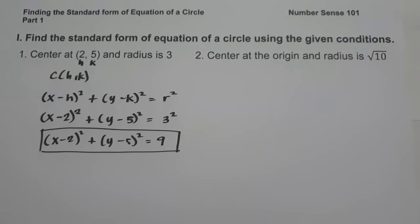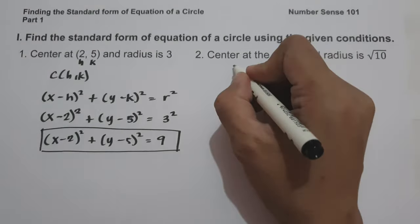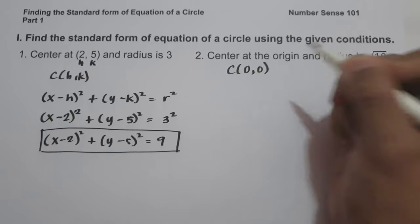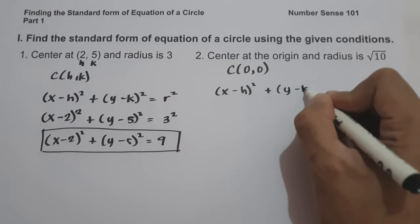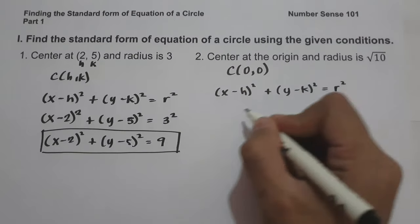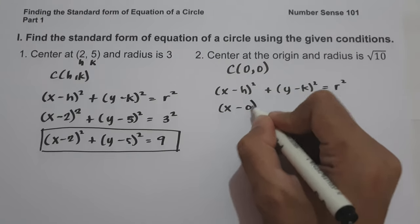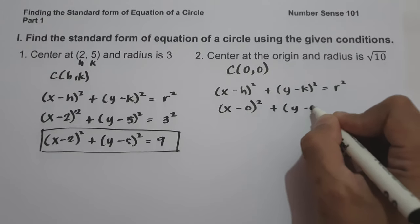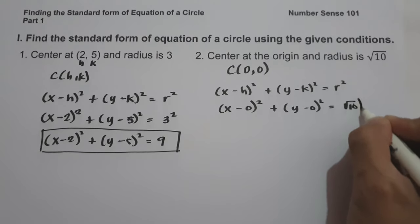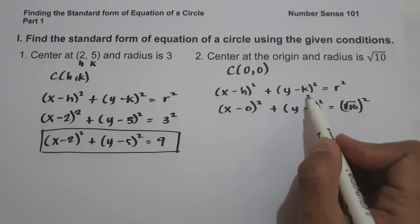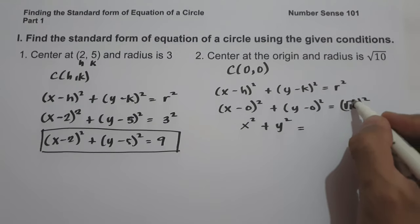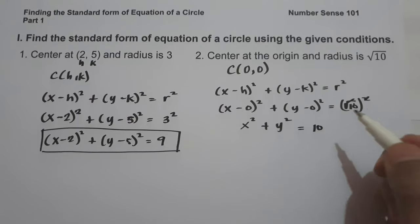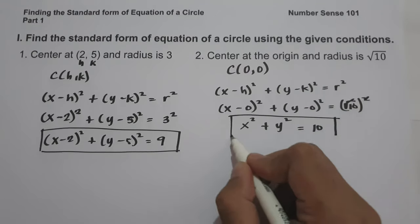On number two, we have center at the origin and radius is square root of 10. When the center is at the origin, h and k are both zero. Substituting into the standard form: (x minus 0) squared plus (y minus 0) squared equals (square root of 10) raised to 2. Since h and k are zero, this simplifies to x squared plus y squared equals 10, and this is the standard form.